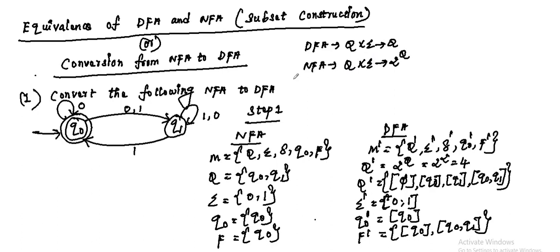Coming to the first problem: convert the following NFA to DFA. In this transition diagram is the original non-deterministic finite automata. In the first step, both NFA and DFA have 5 tuples. So M equals Q, sigma, del, Q0, F.